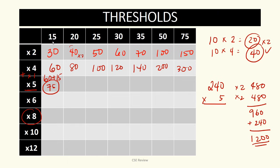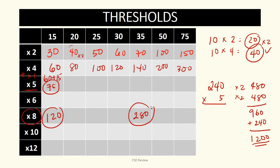Let's jump to times 8 of 15. You can think of times 8 as four times 2. So 4 times 30 is 120. In the same way, 35 times 8 — if times 2 is 70, then times 4 of that gives you times 8. 7 times 4 is 28, so the answer is 280. That is how thresholds helps with mental math.